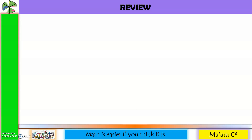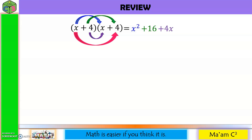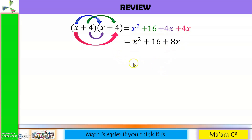Let us recall the product of a binomial from my last video lesson. Let us answer this using the SMILE method. x times x is x squared. Positive 4 times positive 4 is positive 16. Positive 4 times positive x is positive 4x. And positive x times positive 4 is positive 4x. Let us combine like terms — copy x squared and positive 16. 4x plus 4x equals 8x.